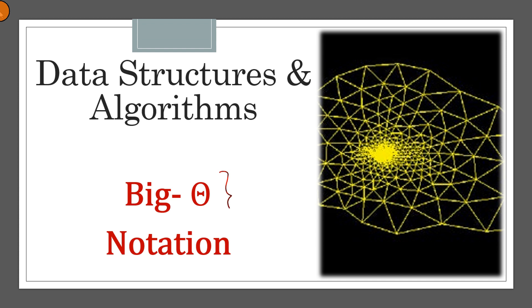In our previous two lessons, we have already seen Big-O notation and Big-Omega notation. Big-O notation was an upper bound on the running time of the algorithm, and Big-Omega notation was a lower bound.